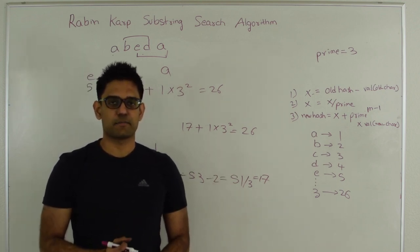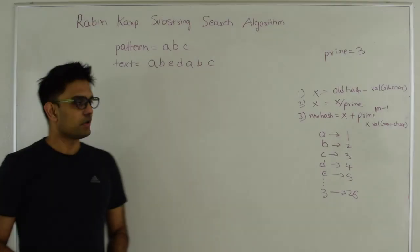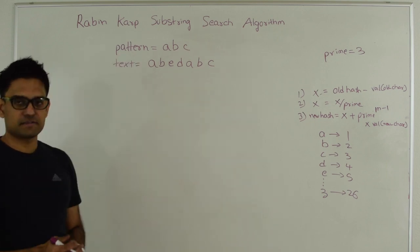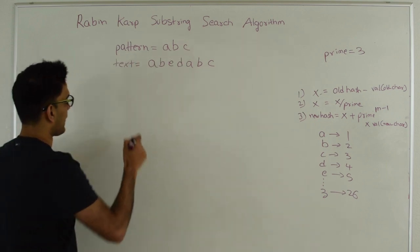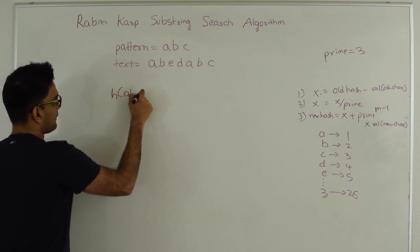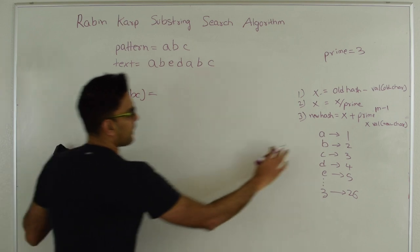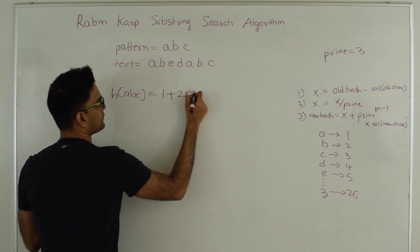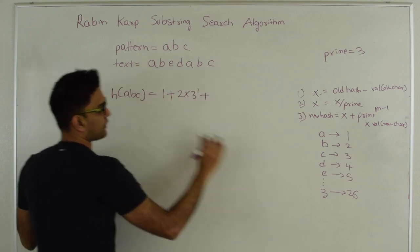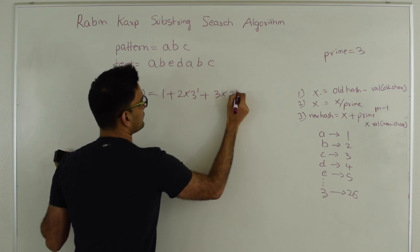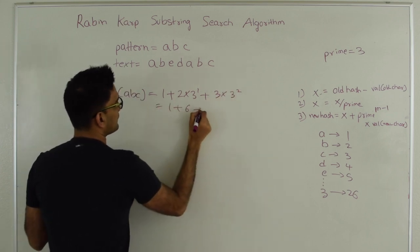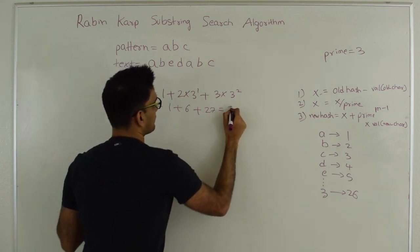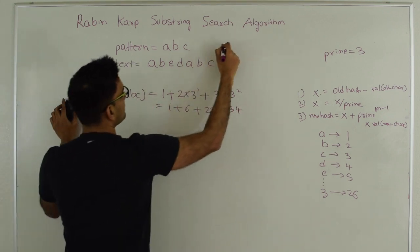Let's take a concrete example and finish up this algorithm. Our pattern is ABC and our text is given, and we want to see if this pattern exists in this text. First we calculate the hash of the pattern. The hash of ABC will be: value of A is 1, plus value of B is 2 times 3 raised to 1, plus value of C is 3 times 3 raised to 2. This gives 1 plus 6 plus 27, which equals 34. So the hash of ABC is 34.